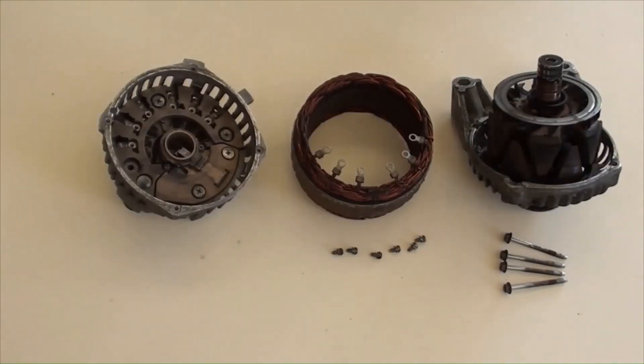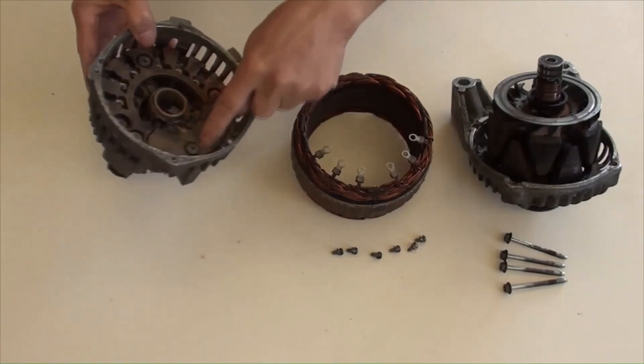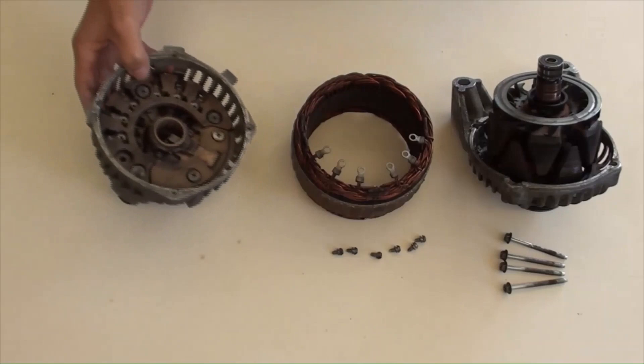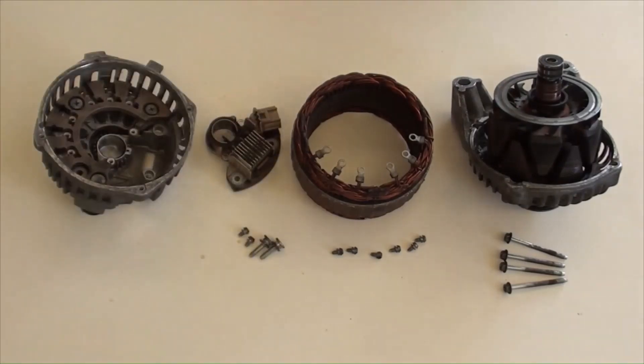Alternator's rotor assembly on the right. Stator in the middle. And diode's rectifier with regulator assembly on the left. This part is regulator, bolted on diode's rectifier assembly. Diode's rectifier with case, regulator, stator, and rotor's assembly have been separated for testing.